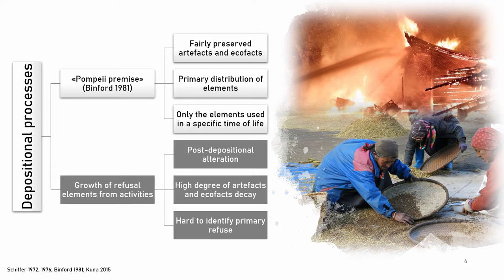The first can be summarized with Binford's famous expression of the Pompeii premise context. Borrowing the definition of Michael Schiffer, the Binford antagonist in a known controversy, Pompeii premise refuse consists of artifacts from the systemic inventory, often still usable, that are left behind on occupation surfaces when people abandon activity areas, structures and settlements. On the other hand, we have deposits caused by the growth of refuse elements from different activities, that can maintain the primary position of discard — we call them primary refuse deposits — or that context where the deposit has been produced by deliberate dumping or has been affected by post-depositional distribution alteration, and we call them secondary refuse deposits.